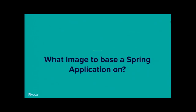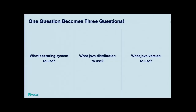The way I've structured this talk is a series of questions. So you want to run a Java app on Kubernetes, so you need a container. What should you use as your base image? That basically boils down to three different questions: what operating system should you use, which version of Java should you use, and which distribution of Java? Let's break it down and go through those.